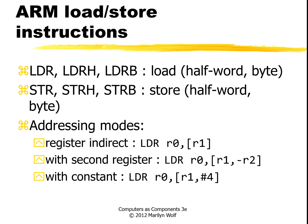Register indirect addressing takes the value of a register and uses that as the address. You can also combine a second register — for example, taking R1 and adding the negation of R2. Or you can take the register and add a constant literal to it.